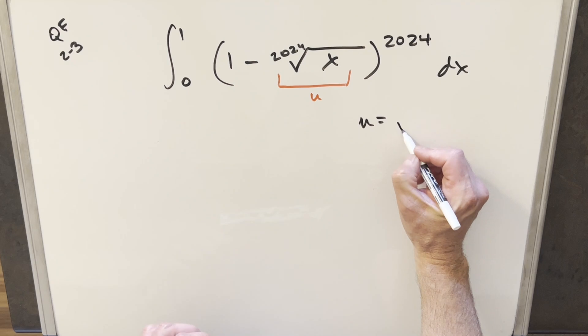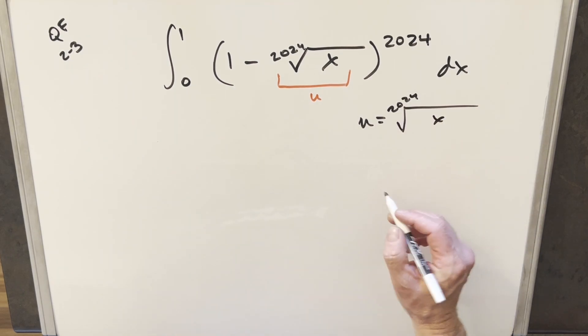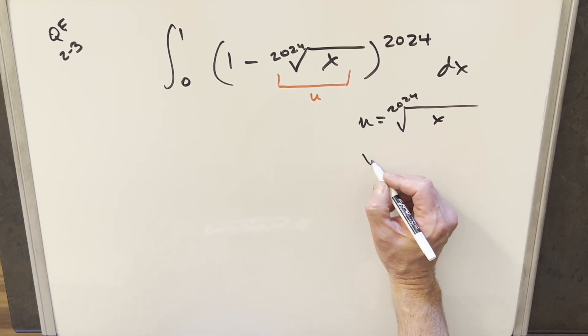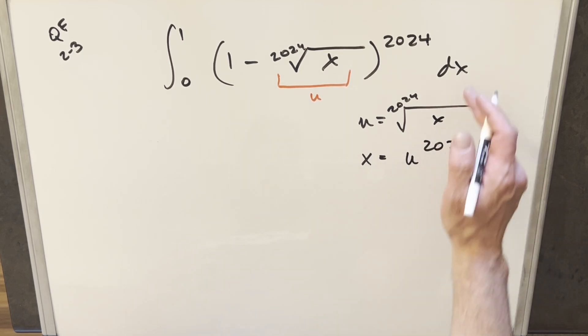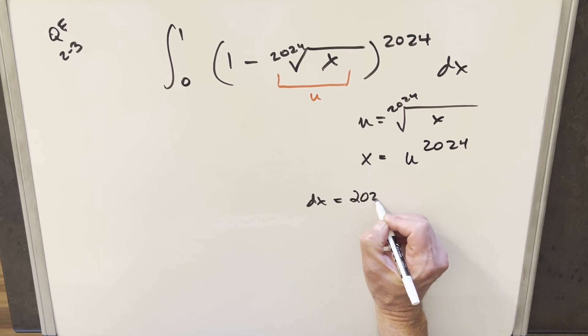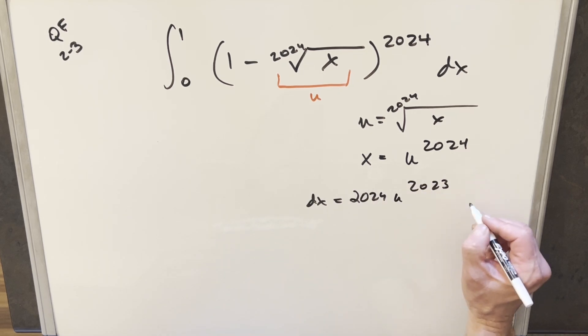So we'll come over here and do this. Let's take the 2024th power on both sides to solve for x. So that's going to isolate x here, but then u is going to become u to the 2024. Then we'll take a derivative here to get the dx value. So dx is going to be